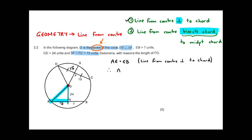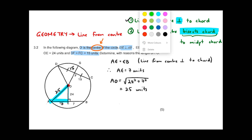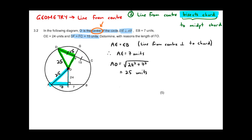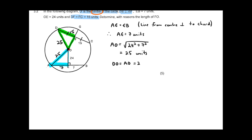Now I can do Pythagoras in that triangle to find AO, which is a radius. AO equals the square root of 24 squared plus 7 squared, which gives 25 units. Since AO is a radius, DO is also 25 units in the other triangle. I back that up by stating: DO equals AO equals 25 units — reason: radii.